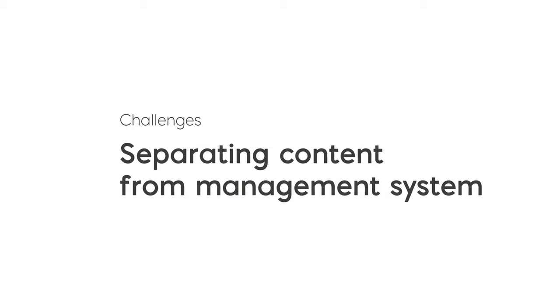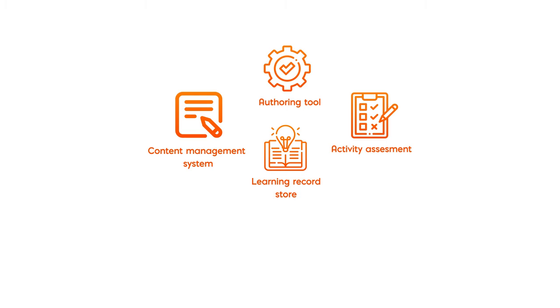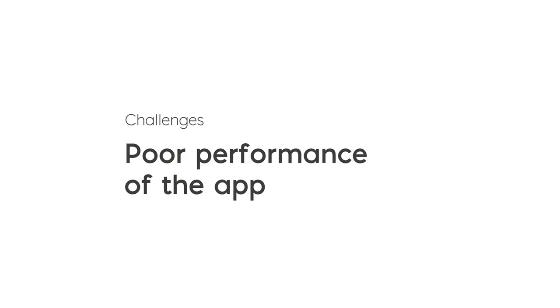On the technical side, the biggest challenge was separating the e-learning content from the learning management system. The application was created when there was no primary e-learning interoperability standard on the market. Therefore, it contains many different capabilities — like the content management system, authoring tool, activity assessment, learning record store, schools, classes and student management, analytics and reporting — all in one platform created around one type of learning content. Unfortunately, this approach does not allow the solution to adapt new e-learning content without extensive development efforts. The second significant challenge is the poor performance of the learning record store and analytic tools, which jeopardizes learning performance metrics. Without proper feedback about gaps in skills or knowledge, students don't have much chance to improve themselves.